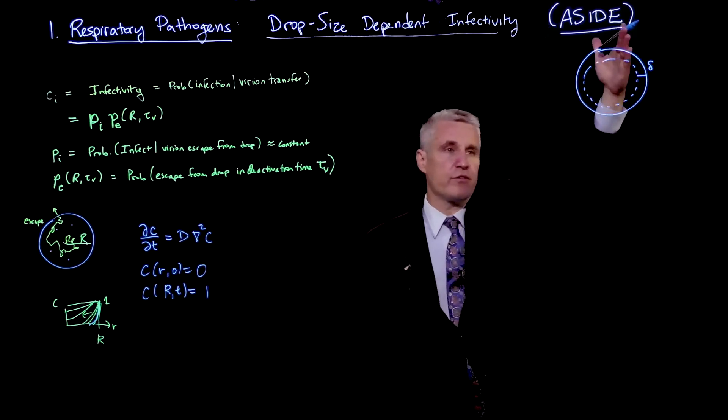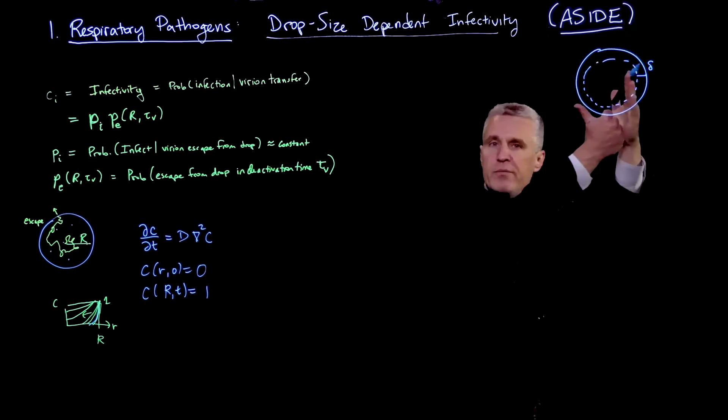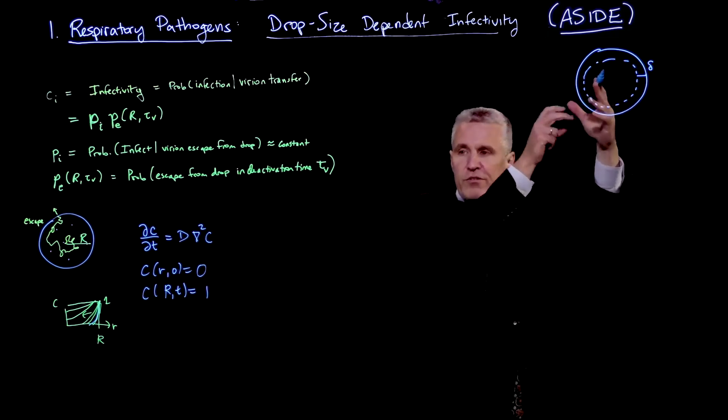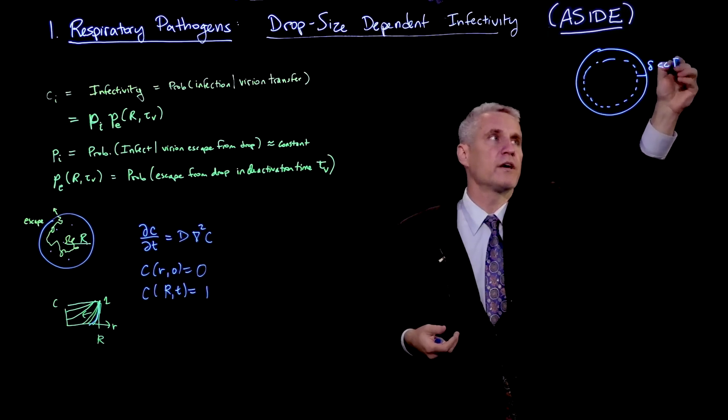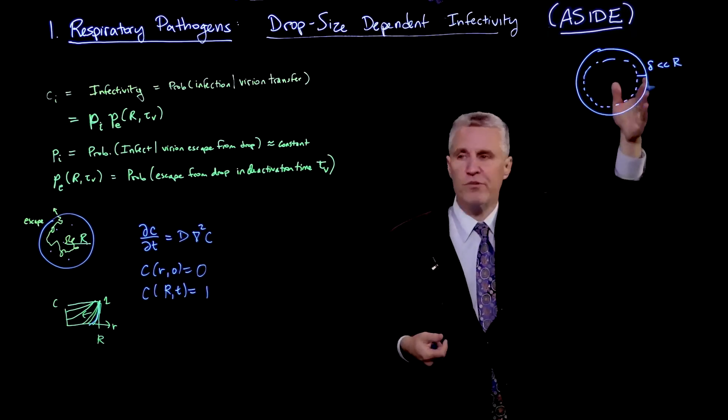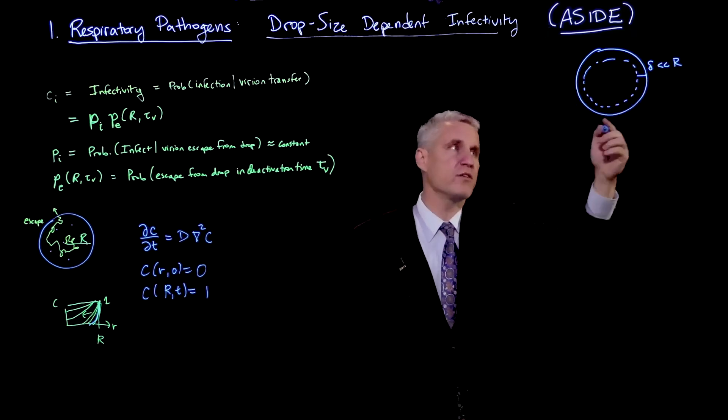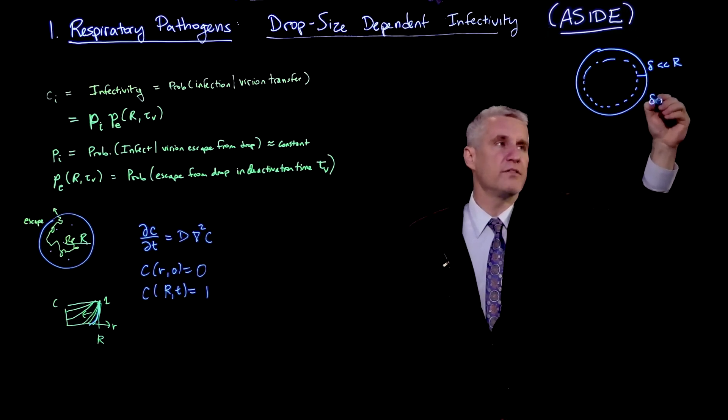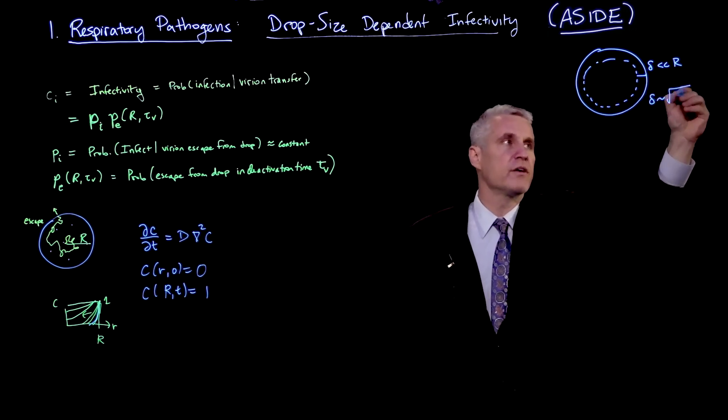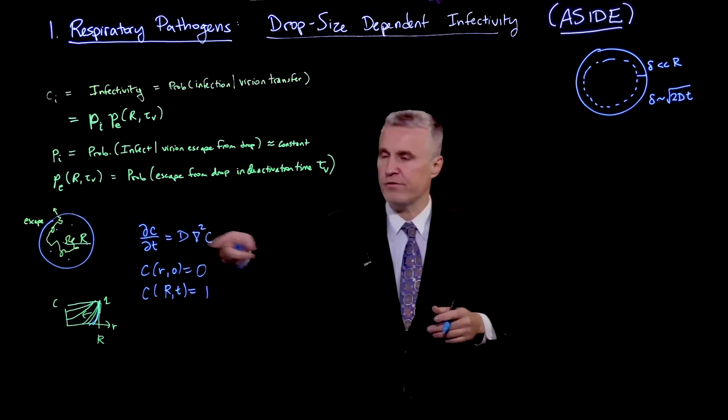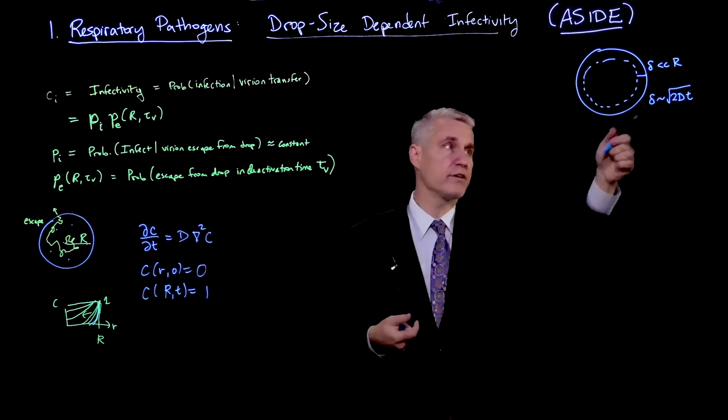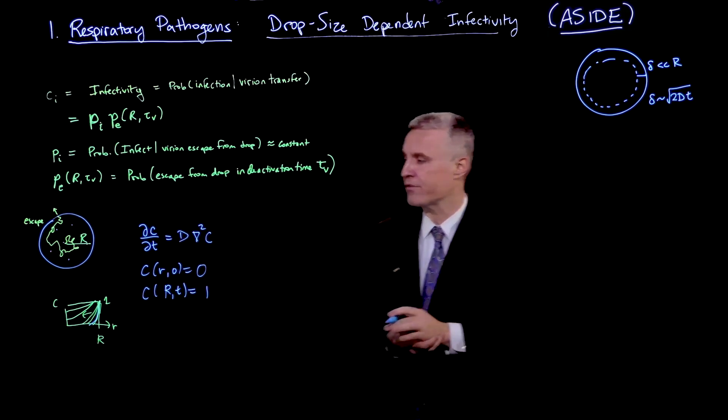If this were just a plane with a semi-infinite diffusion towards the center, and this delta is much less than R, the radius, then it's almost like diffusion from a planar source. We actually know that this distance is well approximated by √(2Dt). That just comes from solving the diffusion equation in one dimension and leads to that scaling of the diffusion layer thickness.